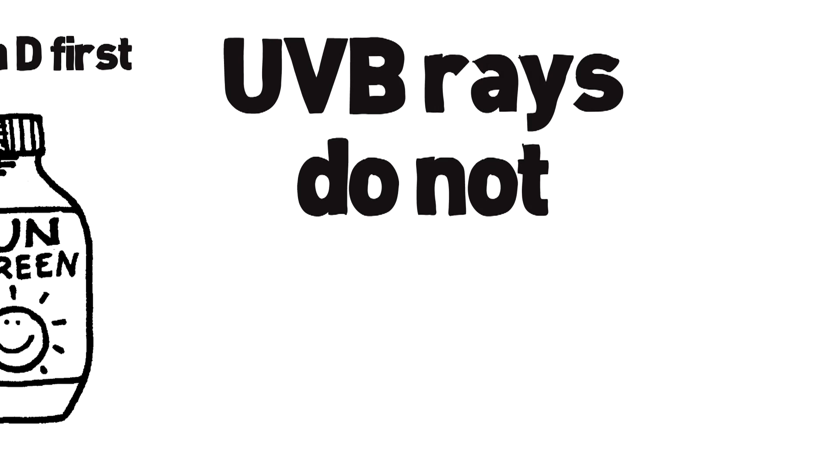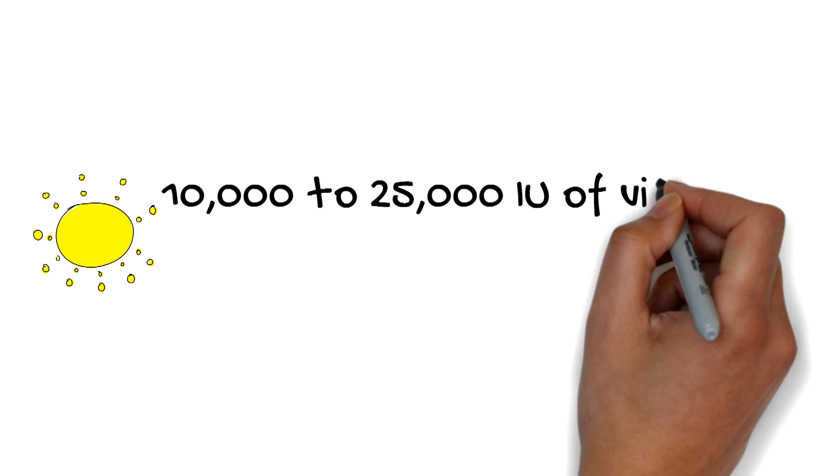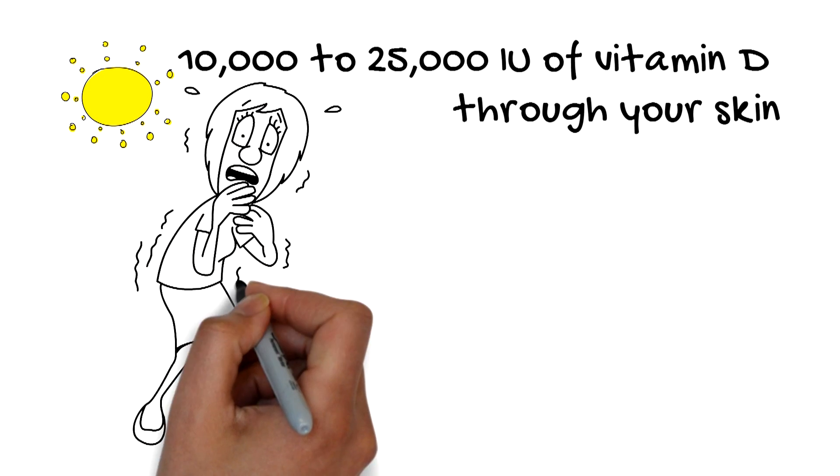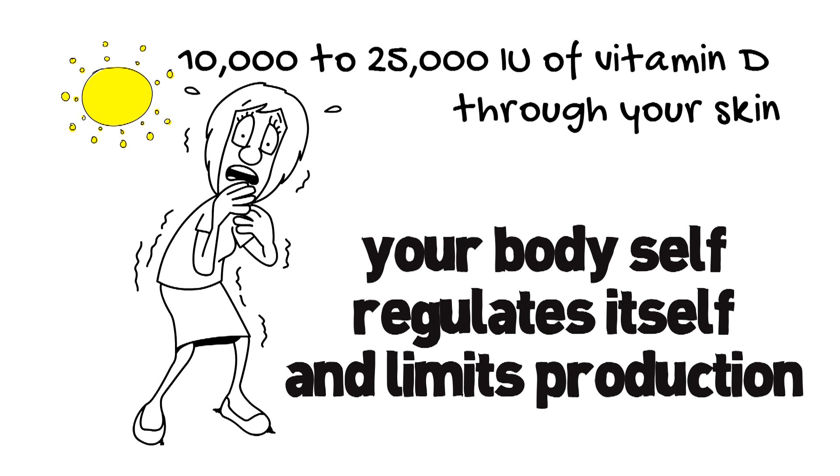UVB rays do not penetrate glass, so sit outside. Daily sun exposure can create 10,000 to 25,000 IU of vitamin D through your skin and you never have to worry about getting too much vitamin D as your body self-regulates itself and limits production.